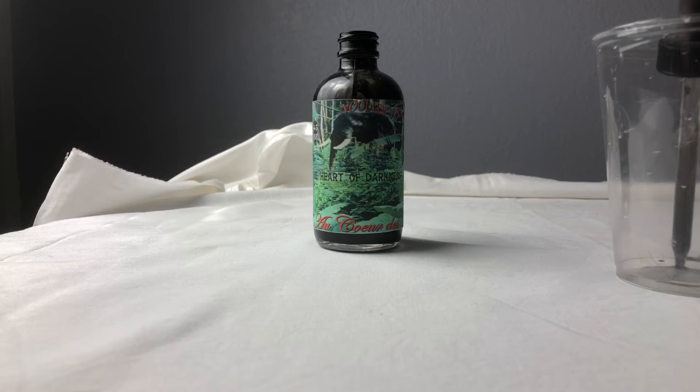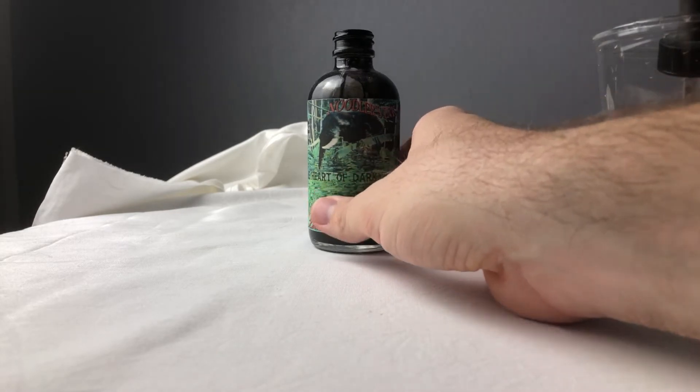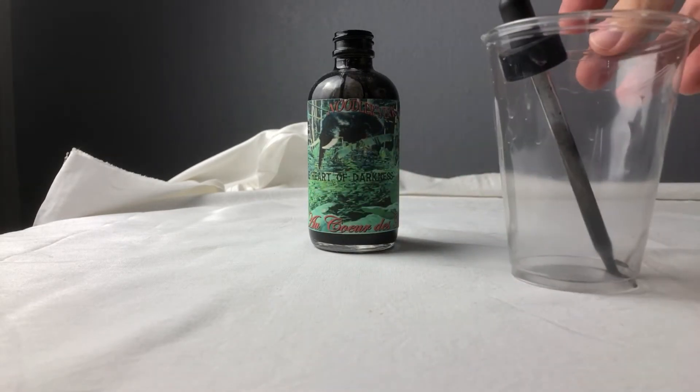So today we are using Noodler's Heart of Darkness black ink. I like this ink. I was looking for the darkest, deepest black I could find. And it turns out that I can actually find a darker black ink. I've settled on Platinum Carbon Black as my favorite dark black ink. I feel like that one is pretty saturated with its blacks. Noodler's Heart of Darkness is a close second. I still use it a lot because I have this gigantic bottle. And it's got an eyedropper cap.